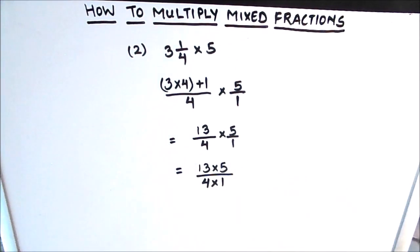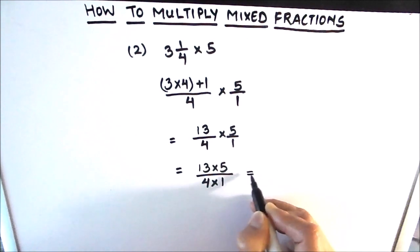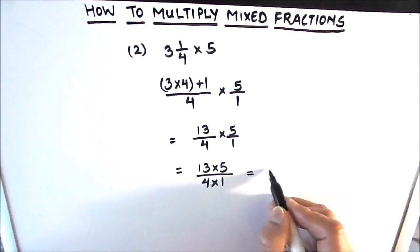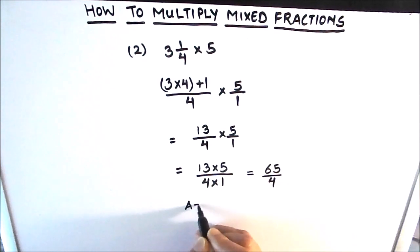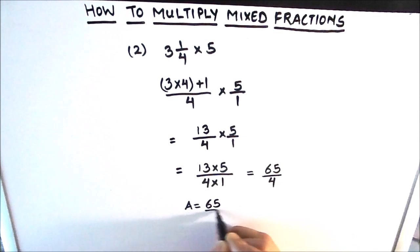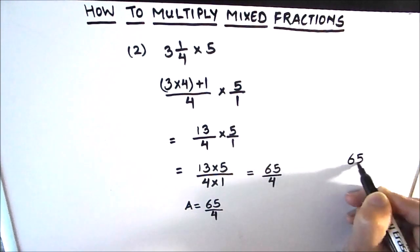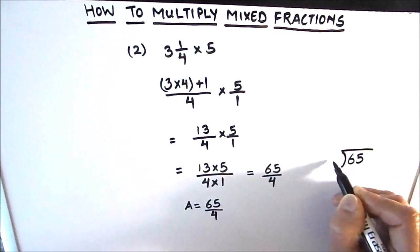The numerator of one fraction gets multiplied with the numerator of the other, and the denominator of one with the denominator of the other. So this is going to be 13 times 5 divided by 4 times 1. Before multiplying, we check whether there is a common factor between the numerator and denominator. Here we see there is no common factor, so we can directly multiply: 13 times 5 is 65, and 4 times 1 is 4. Our final answer is 65 divided by 4.